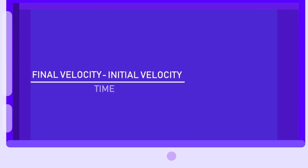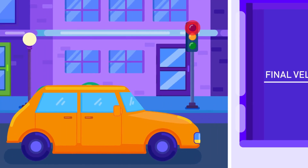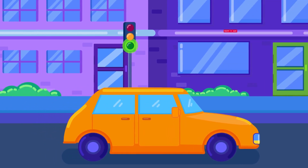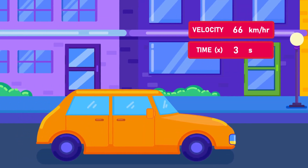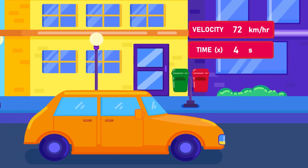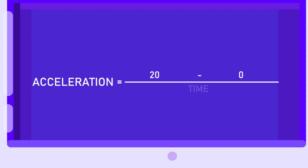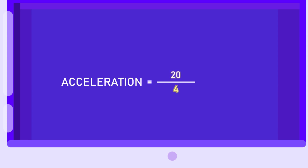The standard unit for acceleration is the unit of velocity divided by the unit of time, which becomes meter per second squared. If a car starts from rest and reaches a velocity of 72 kilometers per hour in just 4 seconds, its acceleration can be counted as: the initial velocity is 0 since the car starts from rest, the final velocity is 20 meters per second, and the time elapsed is 4 seconds. Acceleration is then equal to 20 divided by 4, which is equal to 5 meters per second squared.